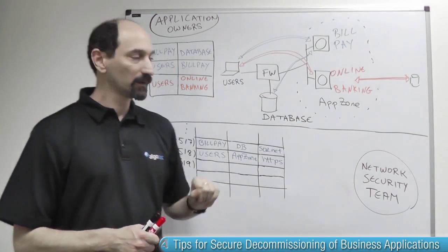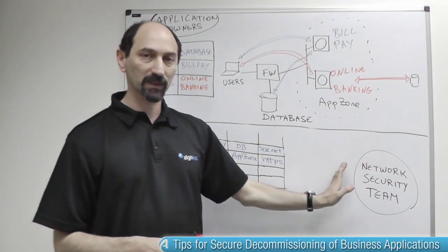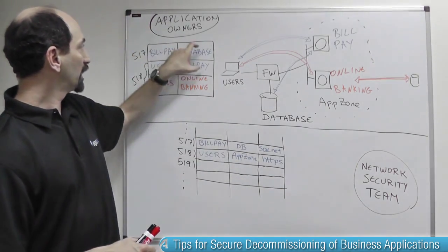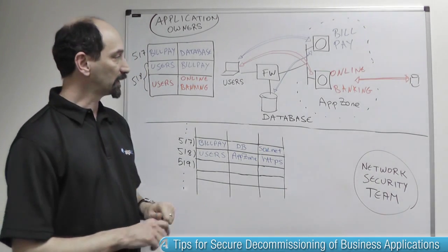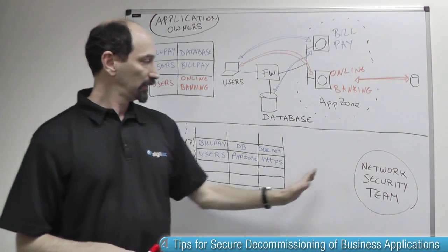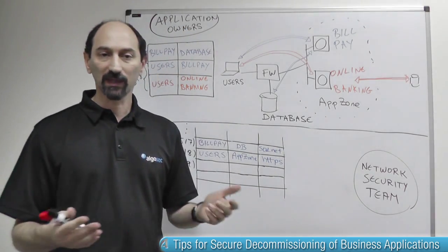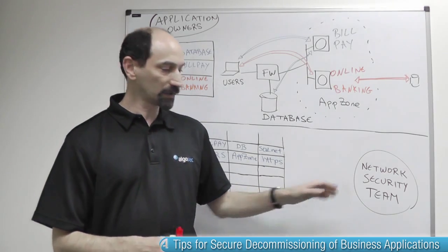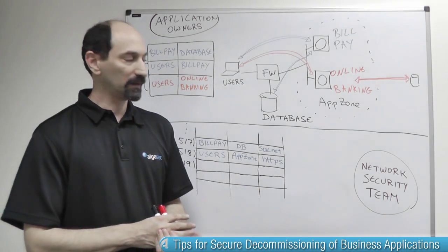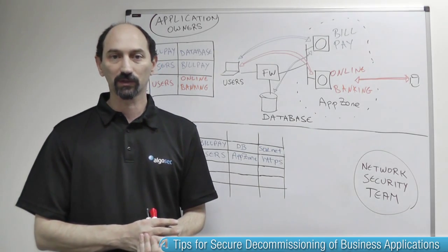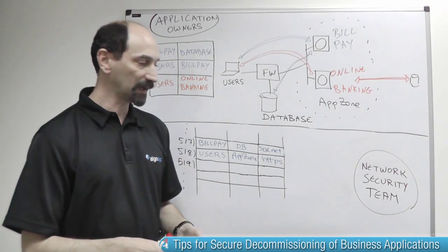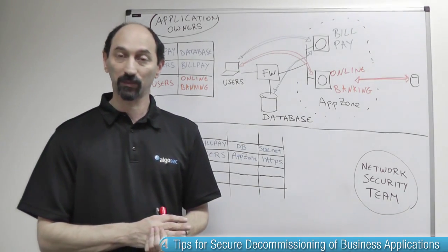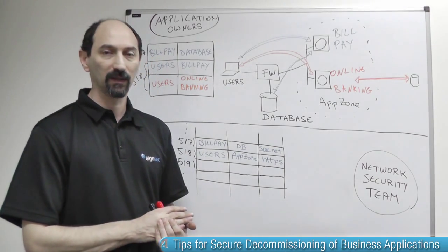When they do that, they would typically notify the network security team, telling them that the old bill pay application and its traffic patterns are no longer necessary and letting the network security team retire the unnecessary rules. When that happens, the network security team faces a damned-if-you-do, damned-if-you-don't situation: they could either retire the unnecessary firewall rules or leave them in place — both choices are unappealing.